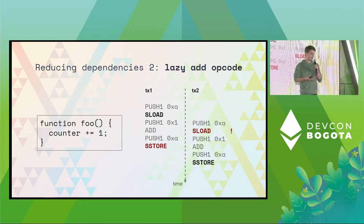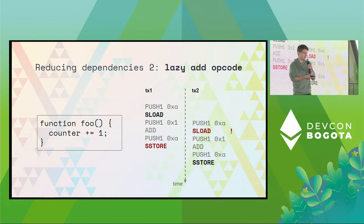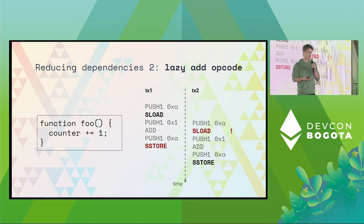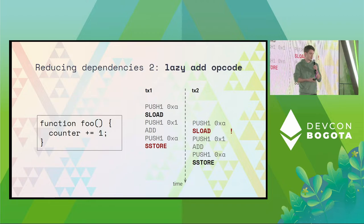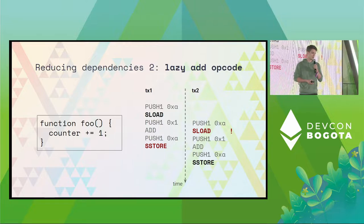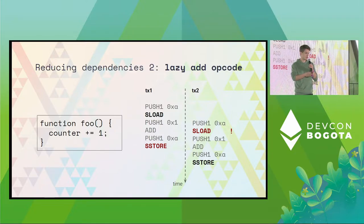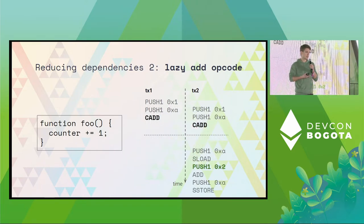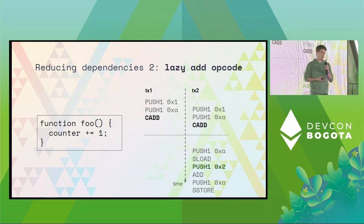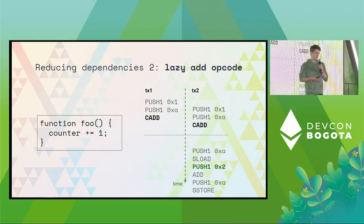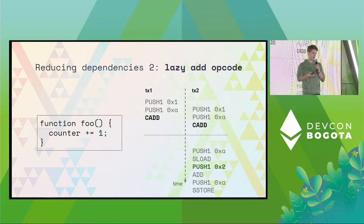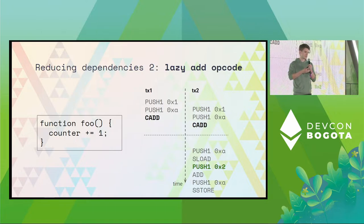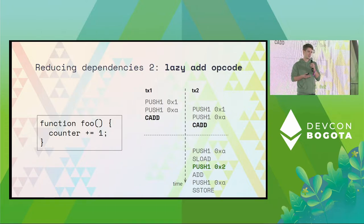The second idea is lazy add opcodes. In this example we have a simple function that just increments a counter, but when you compile it to EVM bytecode, you have a storage load operation, then you do something with that value, and then you store it back. So two concurrent transactions will have a conflict on those concurrent storage load and store operations and cannot be parallelized. The idea is to introduce a new kind of semantics for addition — lazy add or commutative add — which would be evaluated lazily. These transactions can then execute in parallel, and we batch those two updates together into a single update at the end of the block.